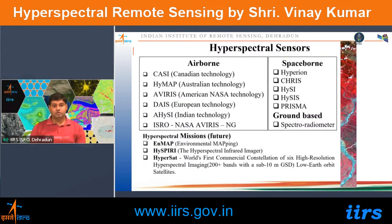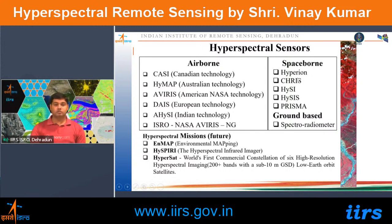Hyperspectral sensors are categorized into airborne, spaceborne, and ground-based. Airborne sensors include CASI (Compact Airborne Spectrographic Imager from Canada), HyMap, AVIRIS, AVIRIS-NG (improved to 5 nm resolution), and AISA (Indian technology). Spaceborne sensors include Hyperion, CHRIS, HySIS (India), and PRISMA (Italian Space Agency). Future missions include EnMap (German Space Agency), FLORIS (ESA), HyspIRI (NASA), and HyperSat — a constellation with 200+ bands and sub-10 meter resolution in low-Earth orbit.